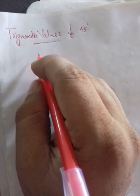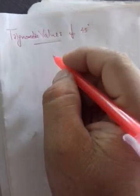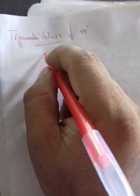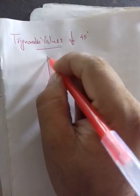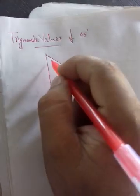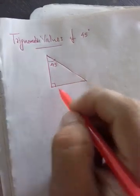Today we are studying trigonometric values of 45 degrees. We know in an isosceles right angle triangle, the angles are 45 degrees, 45 degrees, and 90 degrees.